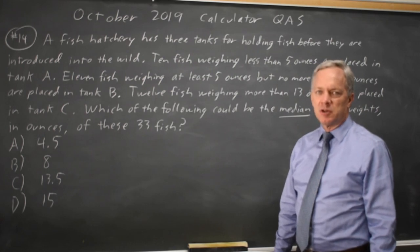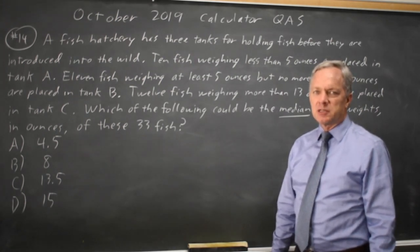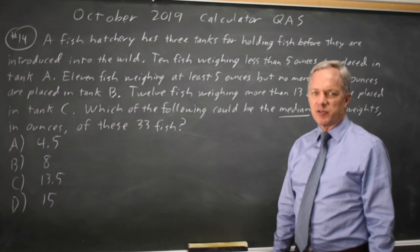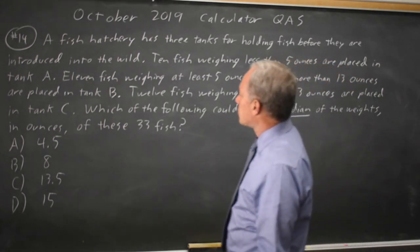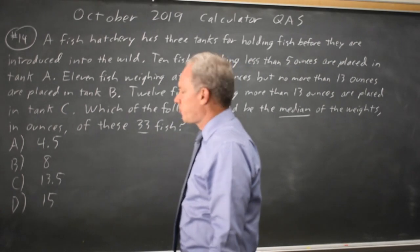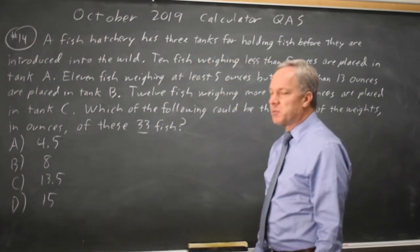So it's important to make sure that you know the definition. The median is the middle number when a set of values are listed from the smallest to the largest, and there are a total of 33 fish, and we want the median weight among these fish.